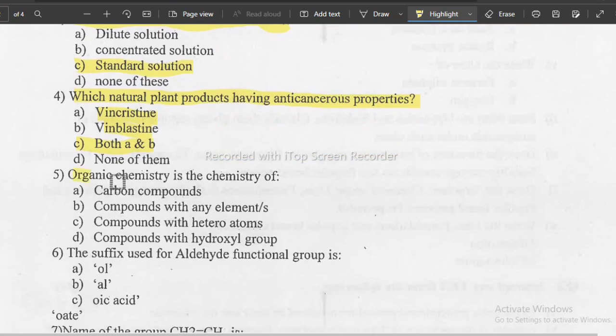Next question we have: organic chemistry is the chemistry of. There are different types of chemistry - physical chemistry, medicinal chemistry. Remember it is the chemistry of carbon compounds.